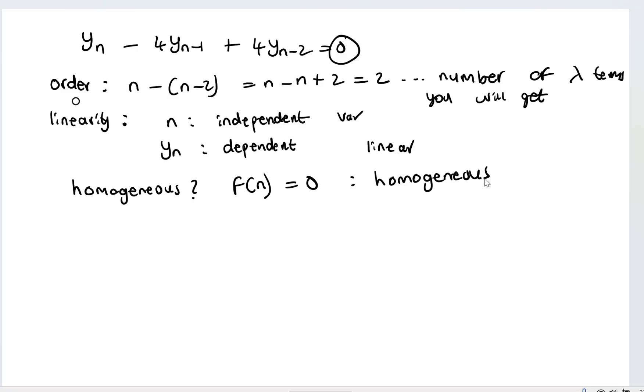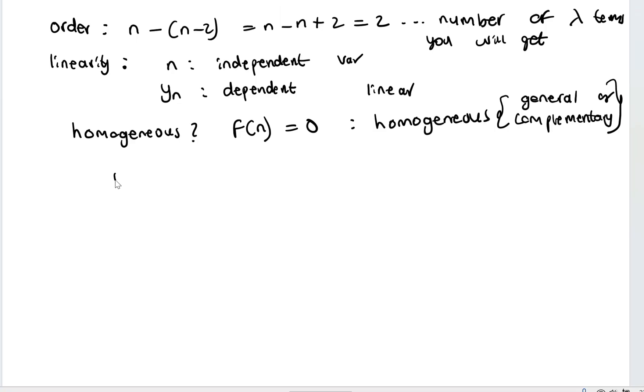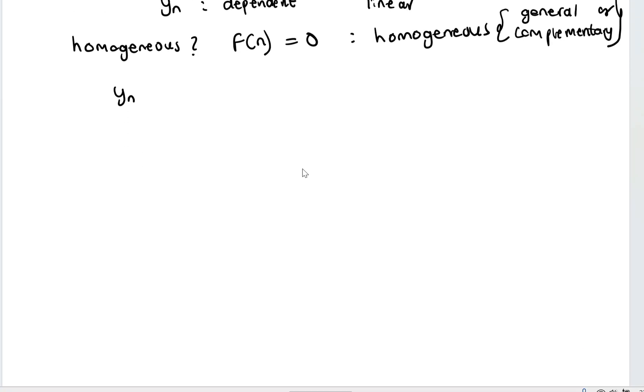Whenever your difference equation is homogeneous, the answer you get is called a general solution or a complementary function. So let's go ahead and solve this difference equation. We are given that y sub n minus 4y sub n minus 1 plus 4y sub n minus 2 is equal to 0.